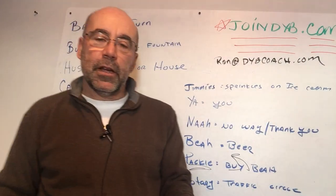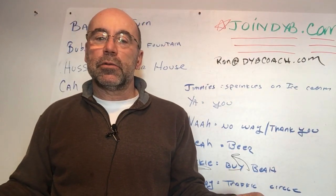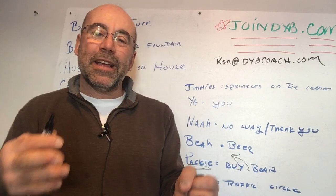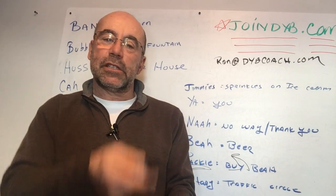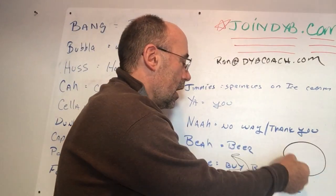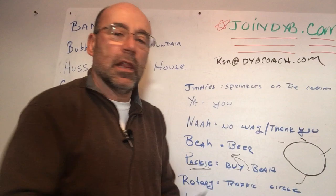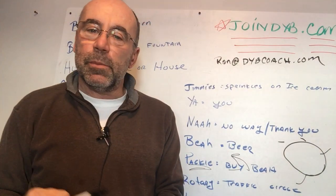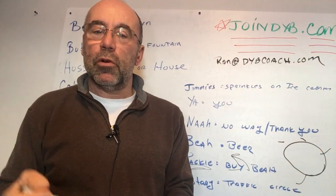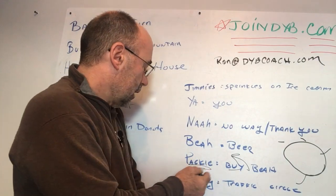Rotary. If you're driving to a job, you might have to go by the Rotary. You take the second turn — the Rotary is a traffic circle. You go in one side, go around the Rotary, and take the second or third left. The GPS might say roundabout, but we call them Rotaries.